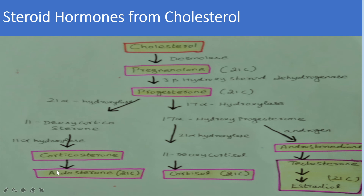From corticosterone, we get aldosterone, a 21-carbon steroid. Also from progesterone, we get cortisol: 21-alpha-hydroxylase converts 17-alpha-hydroxyprogesterone into the precursor leading to cortisol.